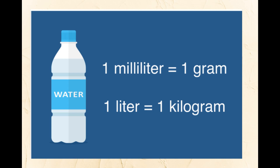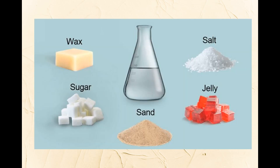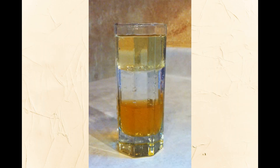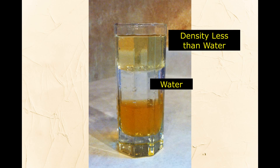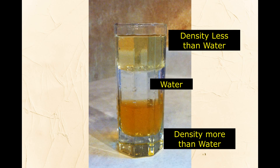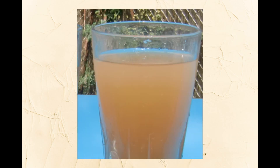Density of water: one liter of water equals one kilogram. This ratio is applicable only for water, not for any other liquids. Depending upon the nature of the material, some materials are soluble in water and some are insoluble. In the case of insoluble materials, if its density is less than water then it will float over the surface. If its density is greater than water then it will tend to settle at the bottom. If its density is more or less equal to water then it will give a suspension-like solution.